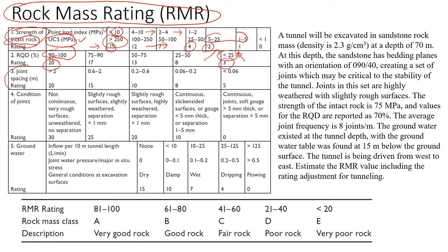Next is joint spacing, which is pretty important. We look at the spacing in meters. If spacing is very large — more than 2 meters between joints — the rating will be pretty high. When we have lots of joints and spacing is pretty small, the rating is pretty low.